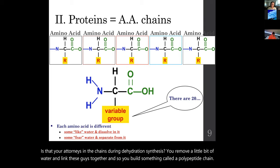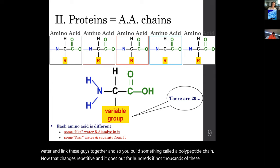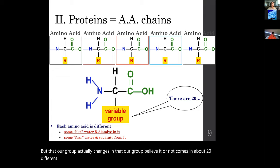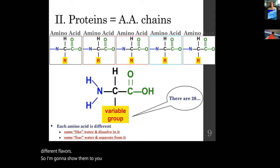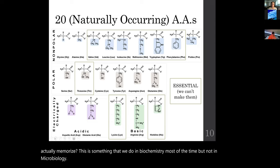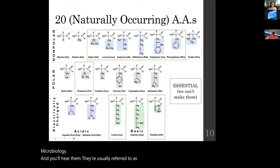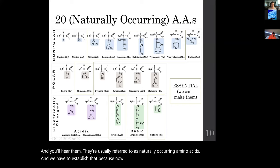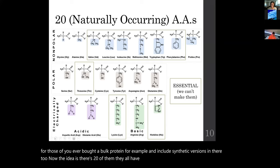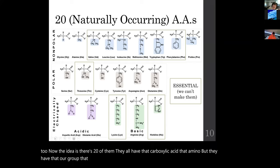The polypeptide chain is repetitive — hundreds if not thousands of amino acids back to back — but that R group actually changes. It comes in about 20 different flavors. These are the naturally occurring amino acids; we have to specify that because now there are also synthetic ones. All 20 have that carboxylic acid and amino group, but their R groups differ — some are short, some long, some neutral, some acidic or basic depending on how they're built.